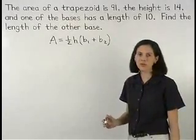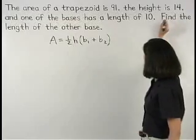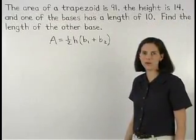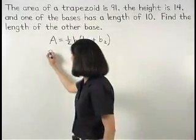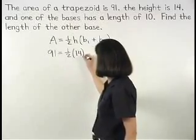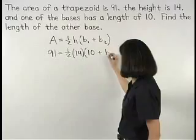We know that the area is 91, the height is 14, and one of the bases is 10. So we can set up the equation 91 equals one-half times 14 times parentheses 10 plus base two.